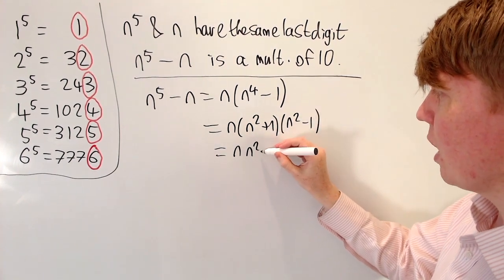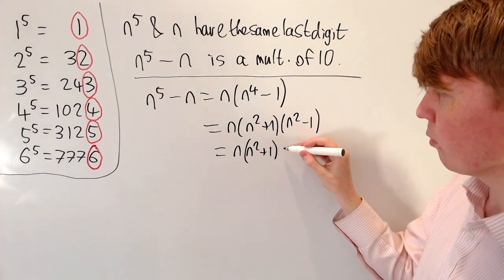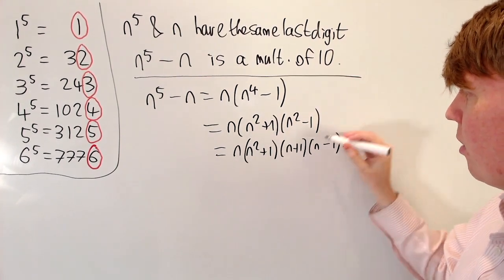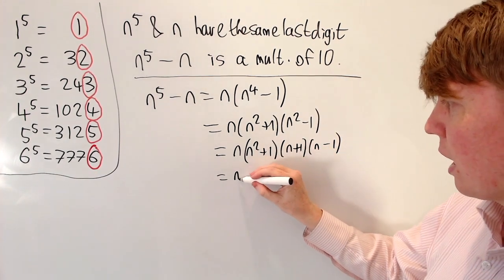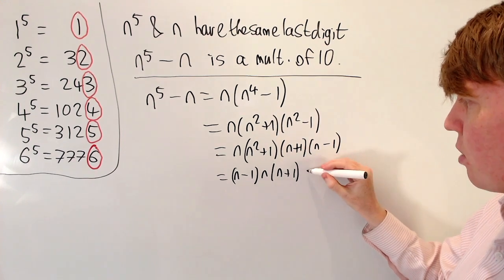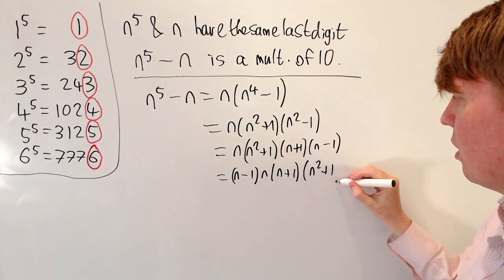And again, n squared minus 1 is also a difference of two squares. We can write this as n plus 1 and n minus 1. So let me just rewrite these in a more sensible order now. So you have n minus 1 times n, that's n plus 1, and n squared plus 1.